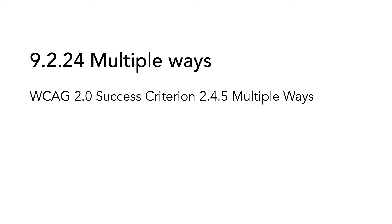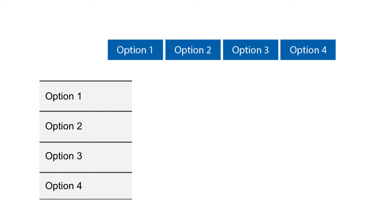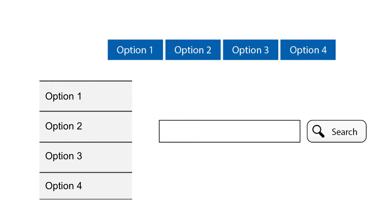9.2.24 Multiple Ways is based on WCAG 2.0 Success Criterion 2.4.5 Multiple Ways. Users prefer to locate content on websites in different ways, and the intent of this criterion is to make it possible for users to do so, even on small websites. If a webpage is part of a set of pages, which they usually are, there must be more than one way to find that webpage. Note that this does not apply if a webpage is part of a process, like a step-by-step activity. Examples of different ways to locate webpages are by navigating in a menu, by using a sitemap, or by using a search function.